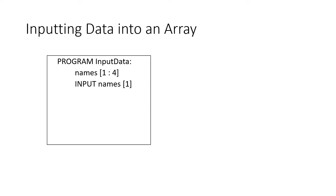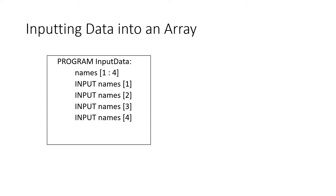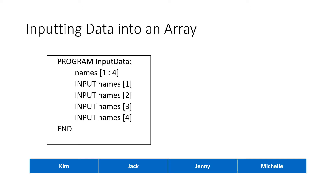To input data into an array, the pseudocode looks as follows — program InputData: declare the array names[1:4], then input names[1], input names[2], input names[3], input names[4], and end. If you typed in all the same names again, the result is shown below.